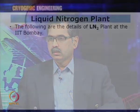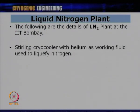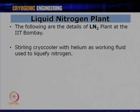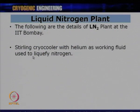Now let us see the liquid nitrogen plant at IIT Bombay. This plant uses a Stirling cryocooler with helium as the working fluid to liquefy nitrogen — it is a closed-cycle system, different from the open-loop systems studied earlier. The cryocooler generates a cooling effect at 77 Kelvin and has a condenser onto which nitrogen gas flows and gets liquefied. The working fluid helium just produces cold, while the nitrogen comes over and gets liquefied.